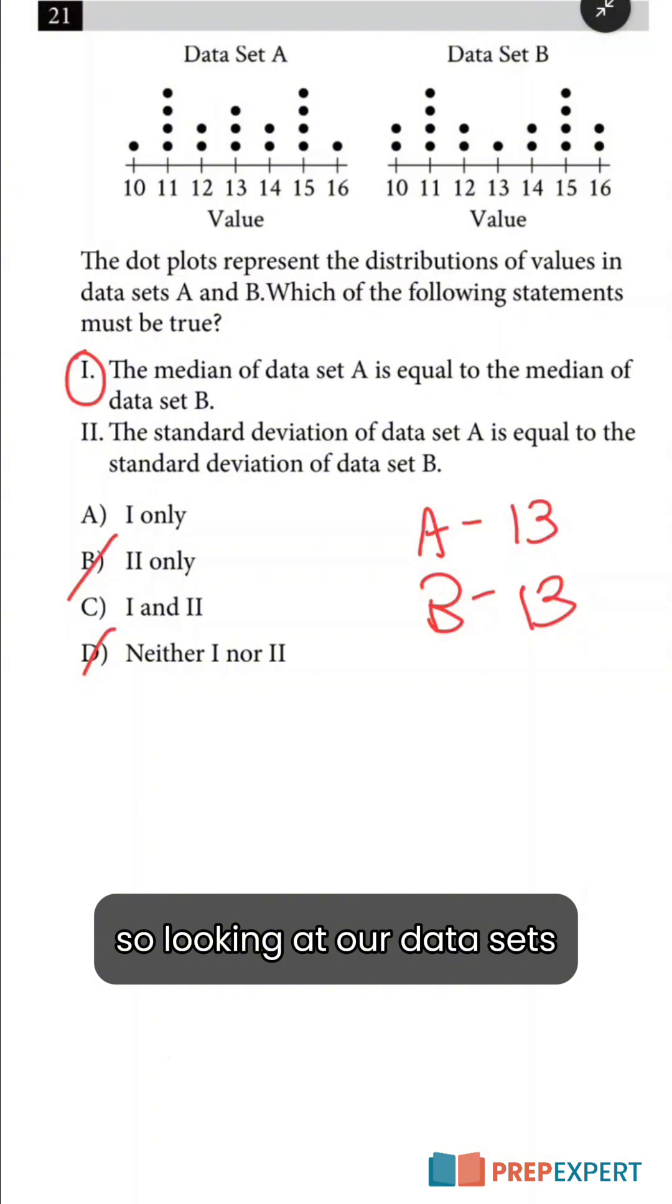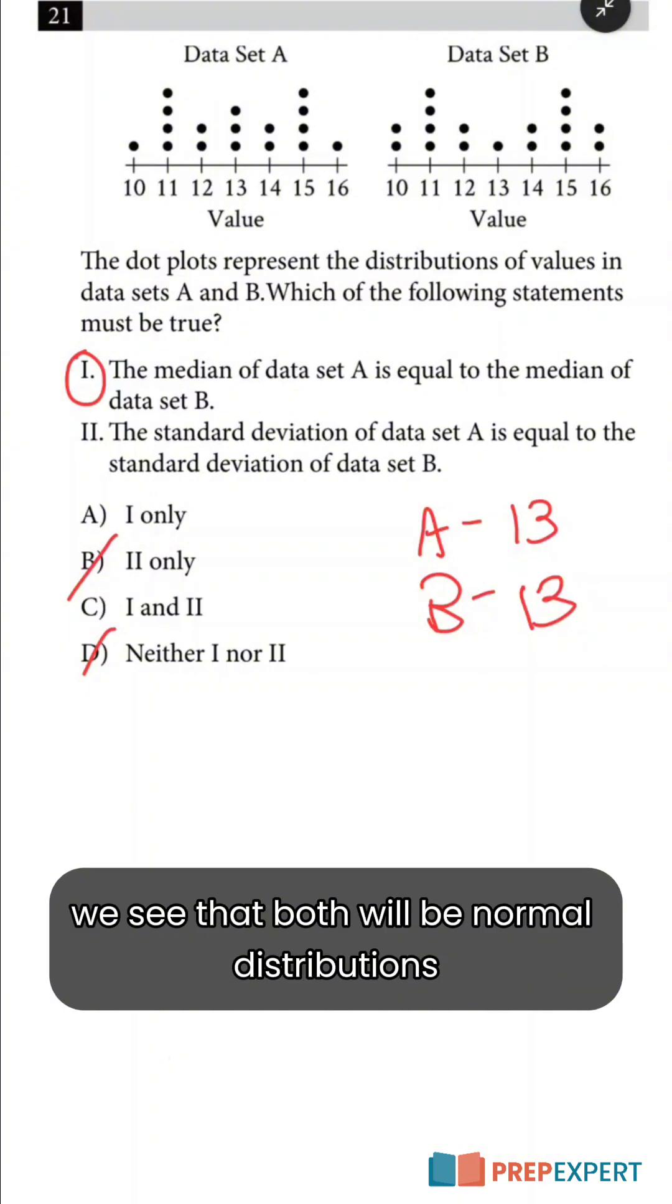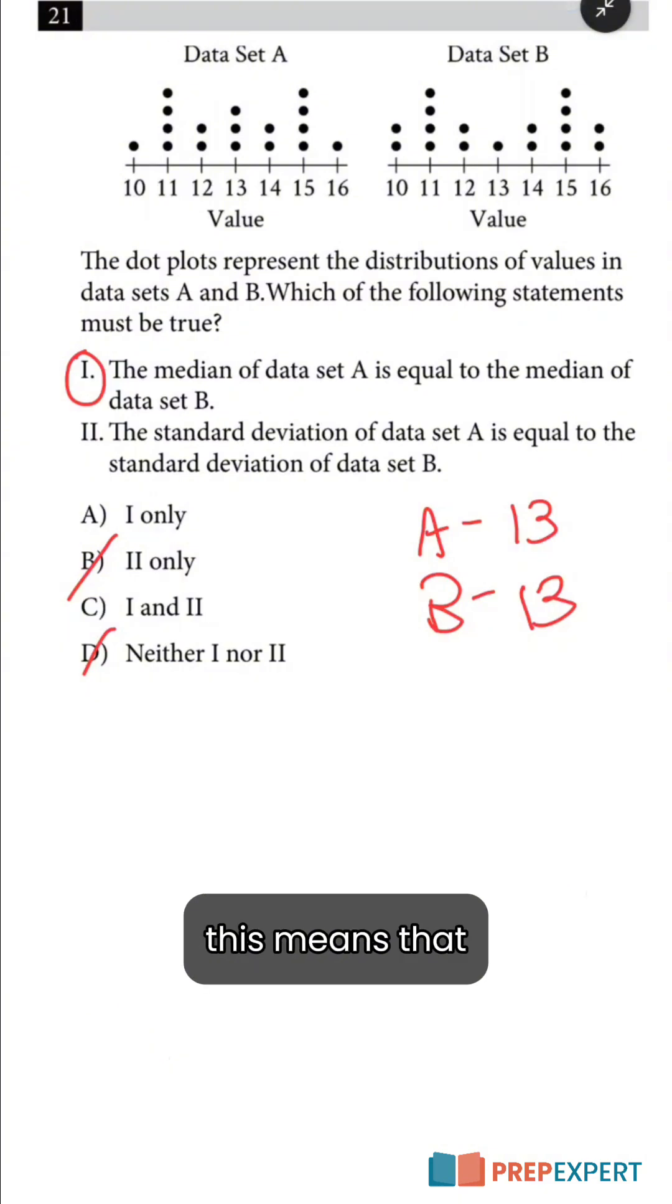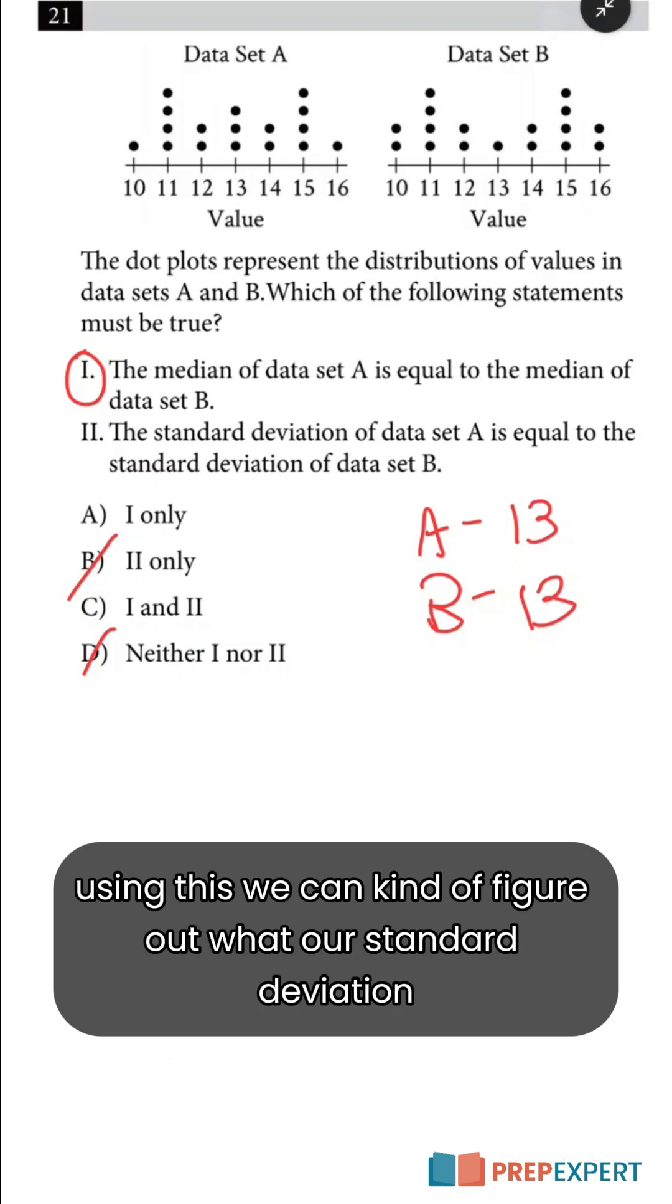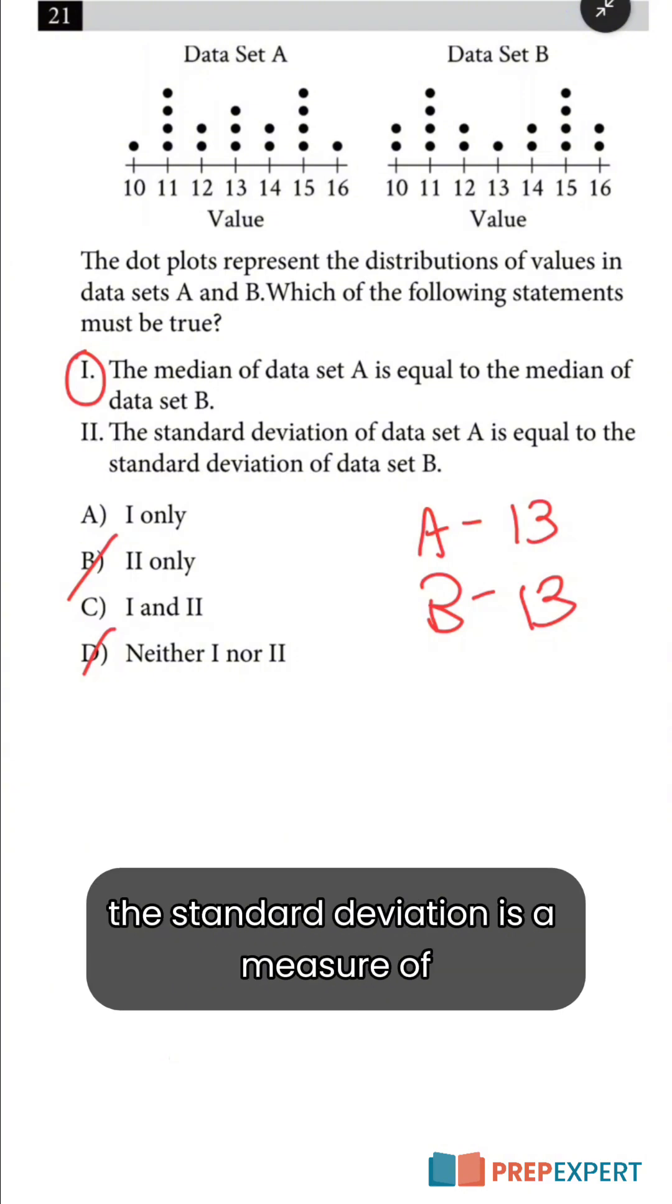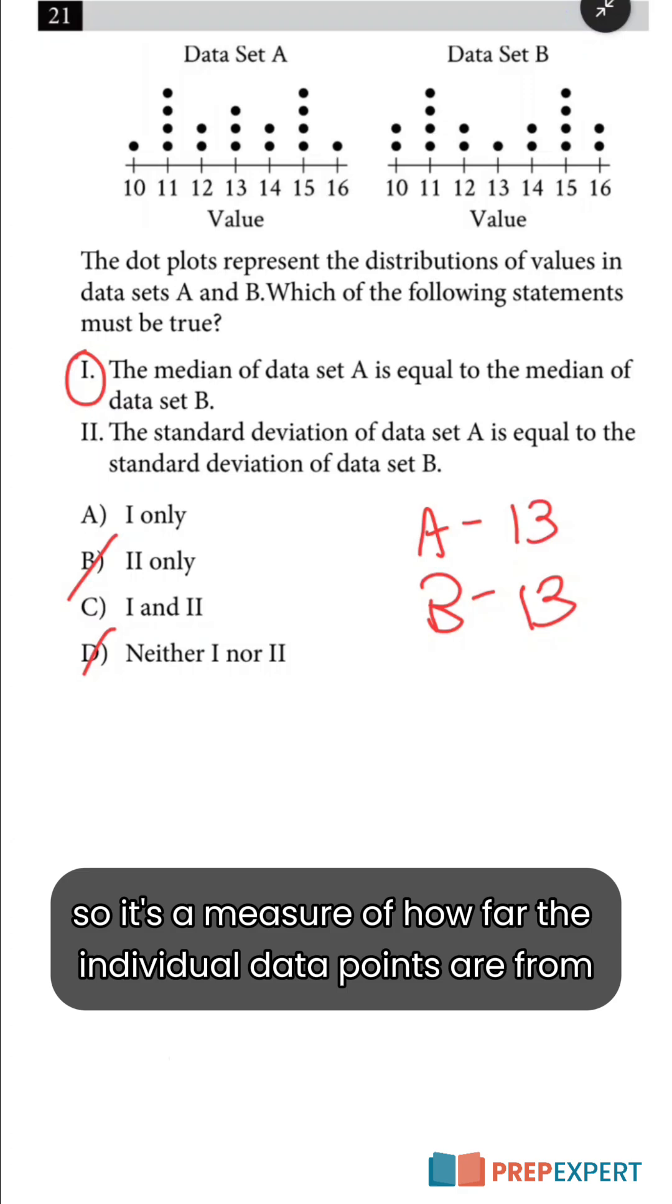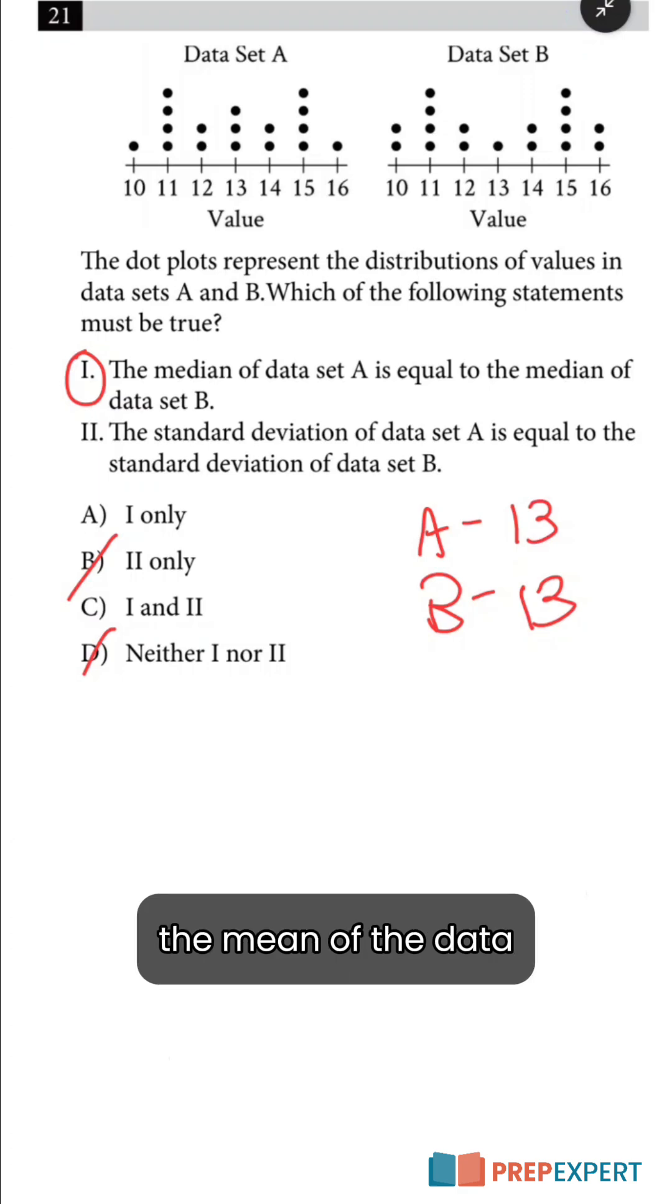Looking at our data sets we see that both will be normal distributions as they have no obvious outliers. This means that the mean will be equal to the median for both of our data sets. Using this we can figure out what our standard deviation for each set will be. The standard deviation is a measure of the amount of variability in a set of data, it's a measure of how far the individual data points are from the mean of the data.